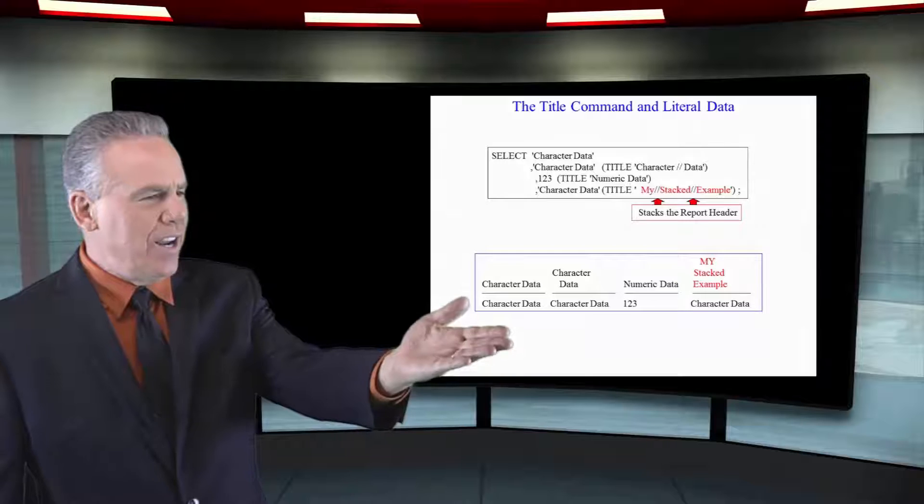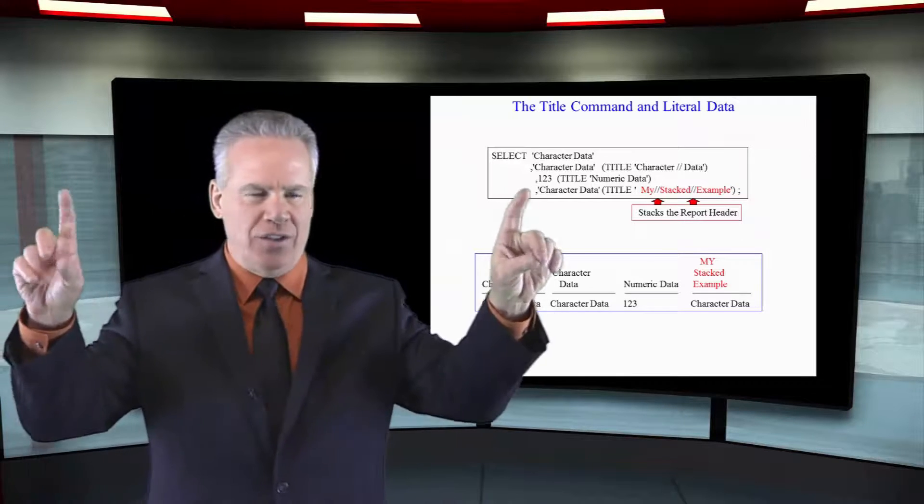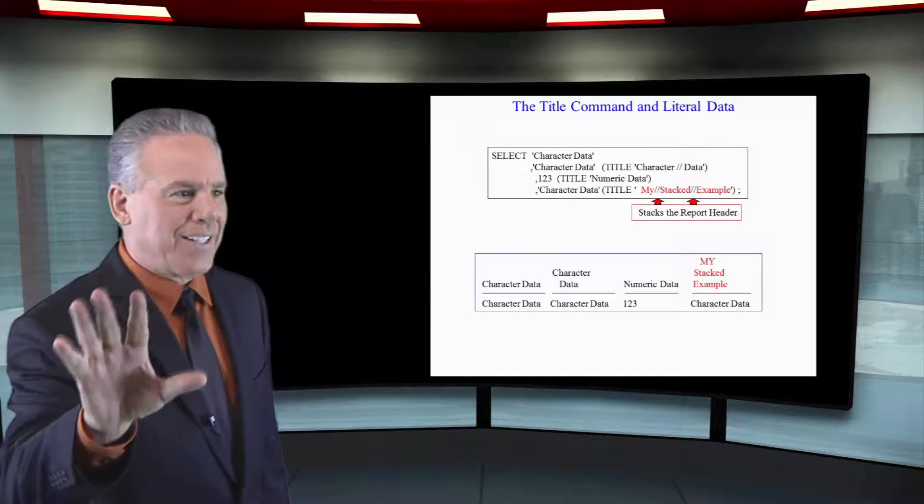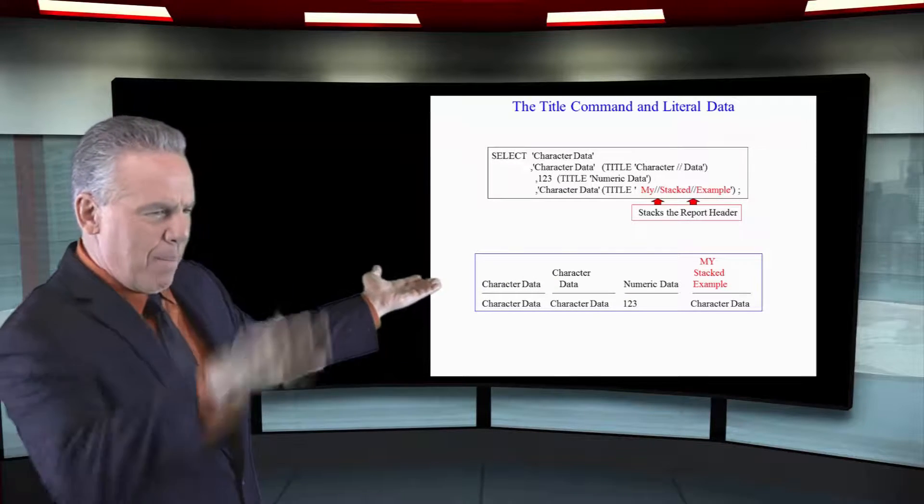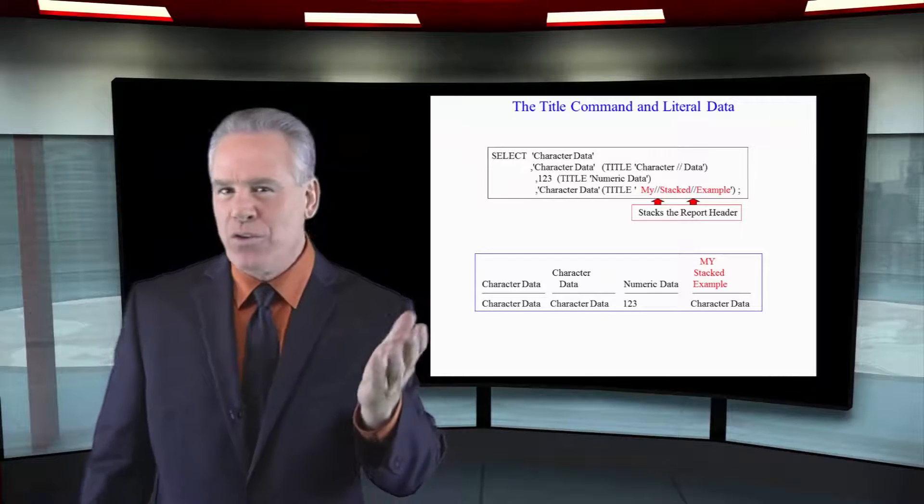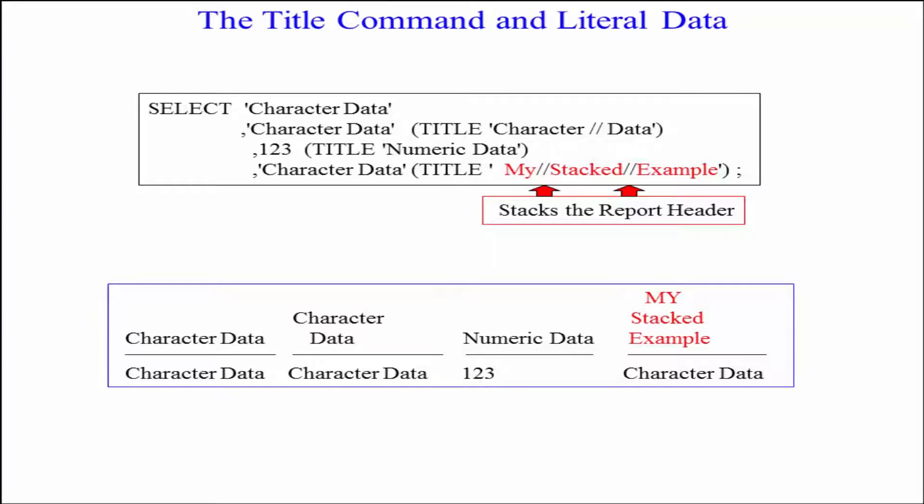As you can see here, we're going to title the second column as character data, single quotes, and then the next as numeric data. But notice my last example. I've got backslashes in there called my stacked example. If you're using the Nexus, this is going to put my stacked example on three different lines as your header.